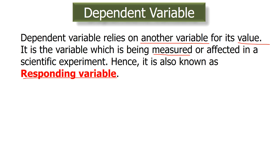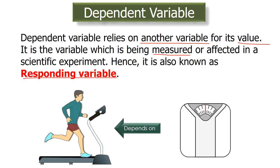One cannot get the value of the dependent variable without the independent variable. So the independent variable denotes the 'if' part of the hypothesis, whereas the dependent variable is the 'then' part of the hypothesis. Now let's take an example. The calories burned by a person depends on the hours spent on exercising, so here the calories burned would be the dependent variable.